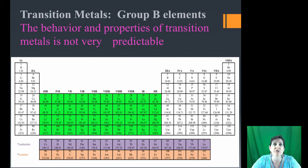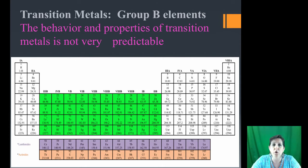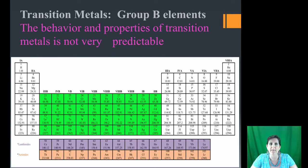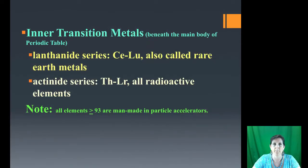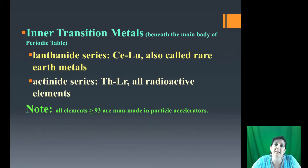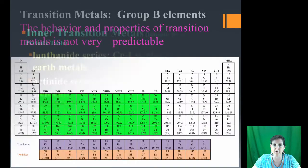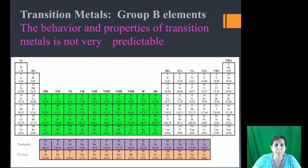Here we have highlighted in green the transition metals — those are the group B elements, labeled 3B across with Bs. At the bottom, we have the lanthanides in purple and the actinides in orange — these are called the inner transition metals. One interesting thing about the actinides is they're all radioactive. In fact, everything above element 93 (neptunium, Np) is man-made in particle accelerators, and most are radioactive, identifiable by parentheses around the atomic mass number.